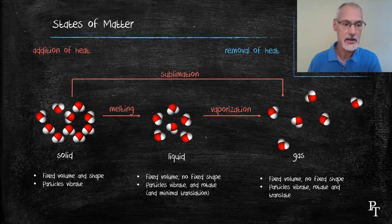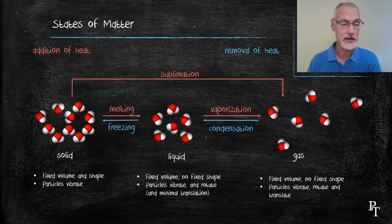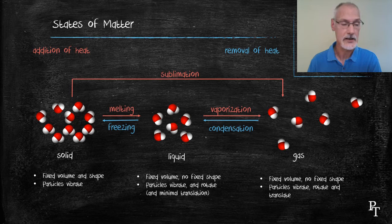We can go in the reverse direction through the removal of heat. So taking our liquid and removing heat from it, it will essentially form again into the lattice. We call that freezing, or condensation when we move from the gas to the liquid phase. Similarly, we can move from gas directly to a solid as in the formation of frost. And that's called deposition.